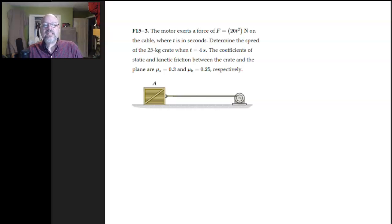All right, so we have a motor, it's pulling on this crate, and the force at which it's pulling is a function of time. F is 20T squared. Determine the speed after 4 seconds. Now, this one, I'm going to be honest with you, totally can be worked using Newton's second law and kinematics the way that we have done before. No problem.